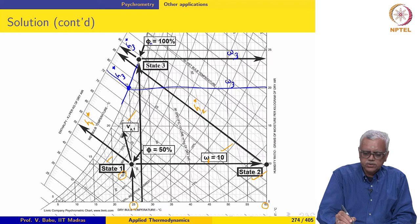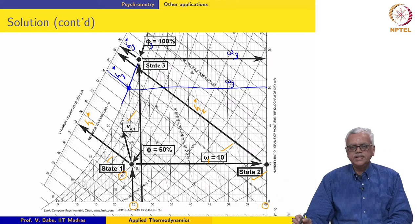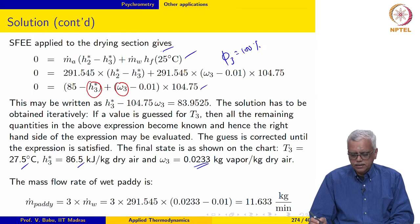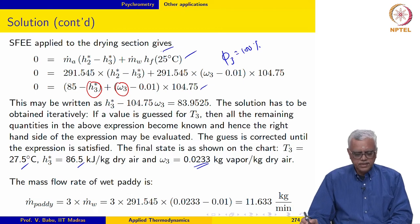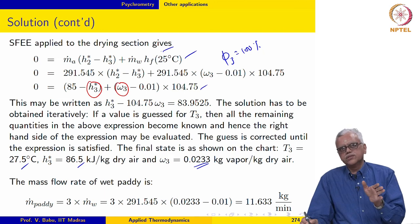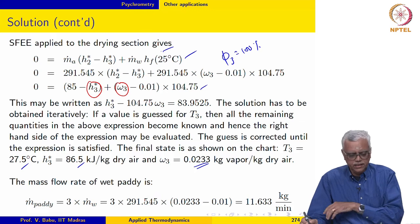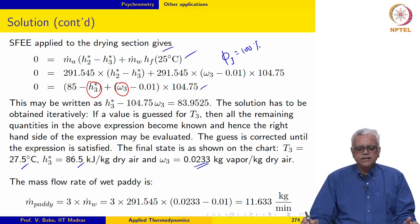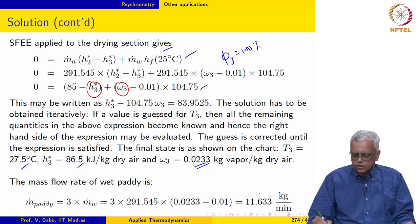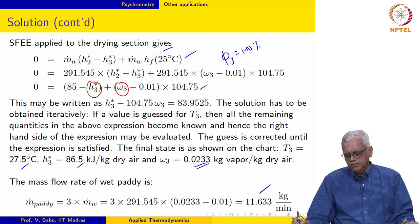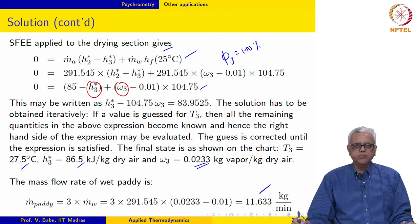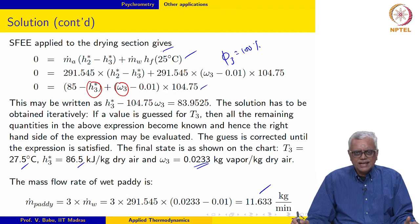The mass flow rate of wet paddy is three times m-dot-W, since one-third of wet paddy is water. M-dot-W is the water absorbed from the wet paddy. The maximum mass flow rate of wet paddy that can be dried comes out to be 11.633 kg per minute. This shows that psychrometric principles are useful not only in HVAC but also in other very practical real-life applications.